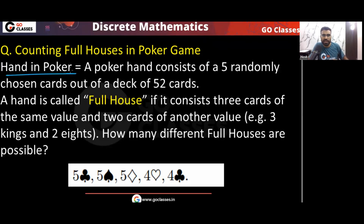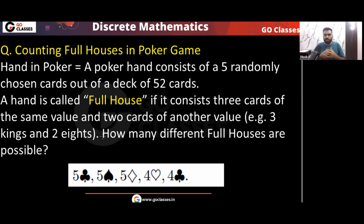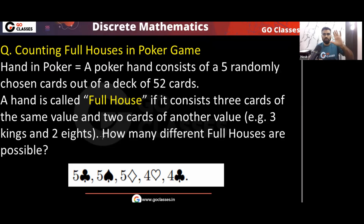What is a hand in a poker game? A hand means 5 cards. From a standard deck of 52 distinct cards, you are given 5 cards — the deck is shuffled and 5 cards are dealt to you. This collection of 5 cards is called a hand.